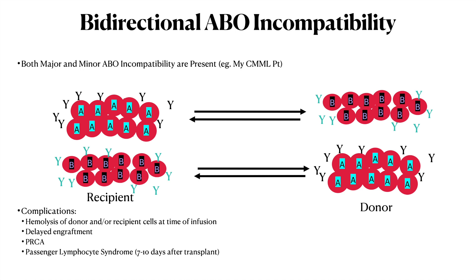Bidirectional ABO incompatibility is when you have both major and minor ABO incompatibility. For instance, if the patient is A-positive and their sister the donor is B-positive — that's bidirectional. The complications are all the complications of both major and minor incompatibility. You have the B donor cells with anti-A attacking the A antigens, and then the recipient's anti-B attacking the B antigens, and vice versa.